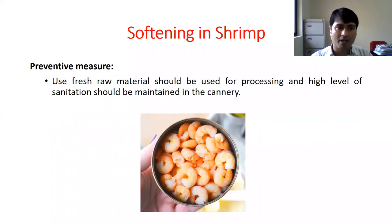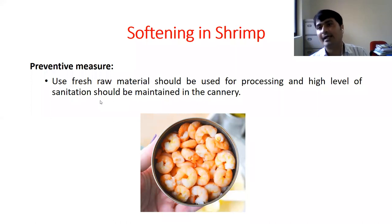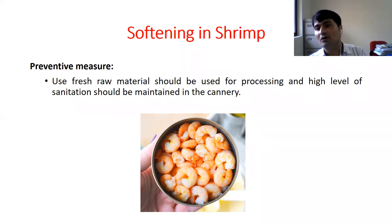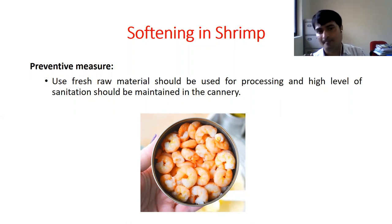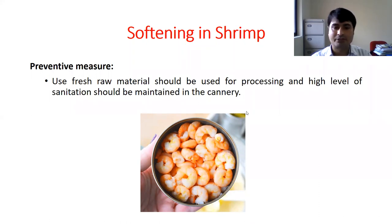The preventive measure — how we can prevent this softening in shrimp? We have to use fresh raw material, and a high level of sanitation should be maintained in the cannery. By using fresh raw materials and maintaining high sanitation in our canning factory, we can prevent softening in shrimp.